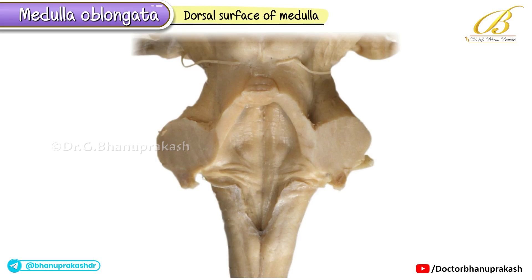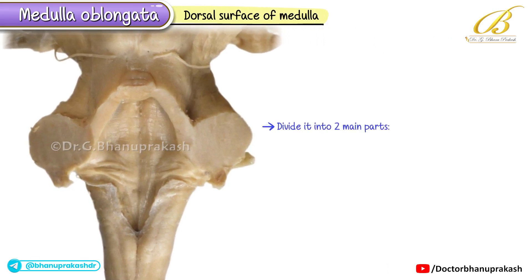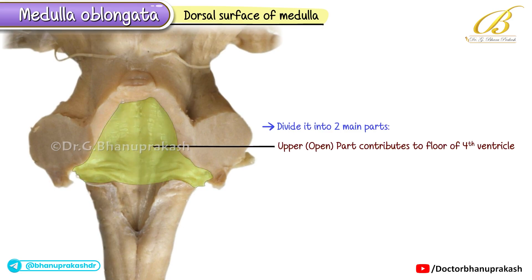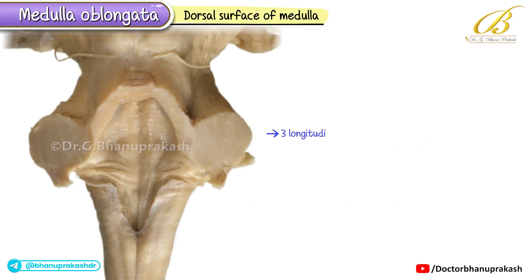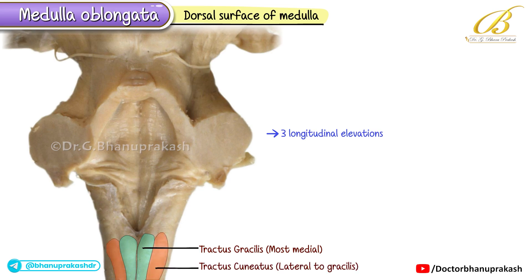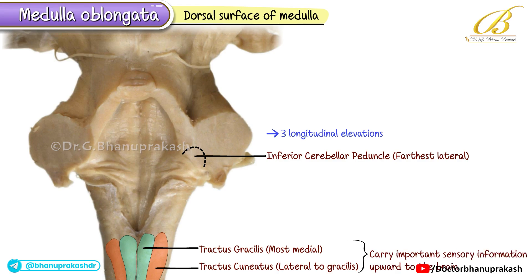Turning our attention to the dorsal surface of the medulla, we can divide it into two main parts. First, the upper open part, which contributes to the floor of the fourth ventricle. Second, the lower closed part, where the central canal — continuous with the spinal cord — runs through. On the dorsal aspect, you can see three longitudinal elevations: tractus gracilis (most medial), tractus cuneatus (lateral to gracilis), and the inferior cerebellar peduncle (farthest lateral). These tracts carry important sensory information upward to the brain.